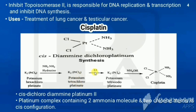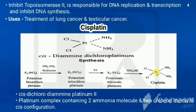Potassium tetrachloroplatinum is then treated with potassium iodide, replacing the chlorines with iodine. Then treatment with ammonium hydroxide and chlorine (Cl2) removes the iodine and hydroxyl group to yield cisplatin, which has a central platinum atom with two chlorines and two NH3 groups.